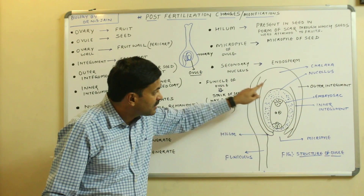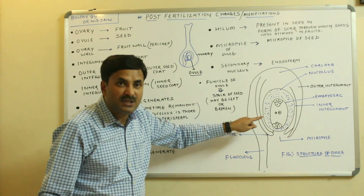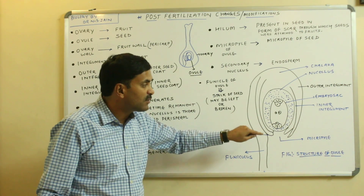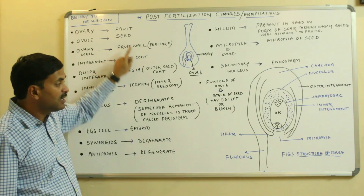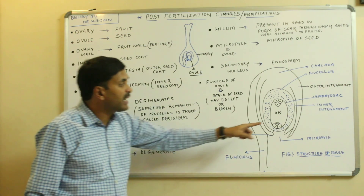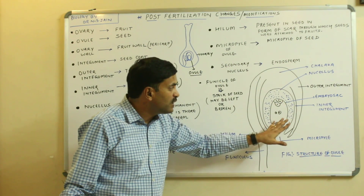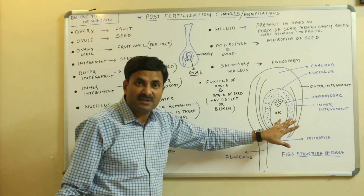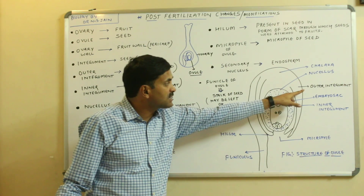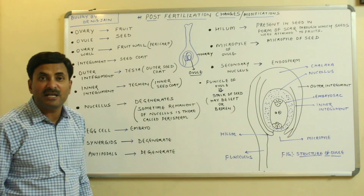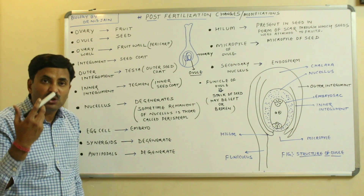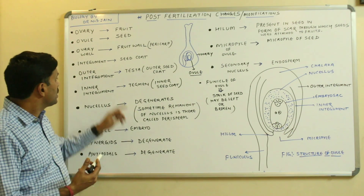This is the diagram of an ovule found inside the ovary. When fertilization occurs, the ovule is converted into the seed. The integuments are the protective coverings of the ovule. Generally, ovules are surrounded by two integuments: one is the outer integument and another is the inner integument, since generally ovules are bitegmic.